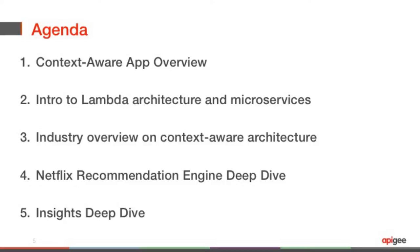So I just want to describe what we're going to be talking about today. First, we're going to give an overview of what a context-aware app is. We're going to talk about two architectural patterns: Lambda architecture and microservices. Greg will give an industry overview on the evolution of these technologies. Then we'll do a deep dive into Netflix, and finally talk about how we apply Lambda architecture and microservices to Apigee Insights.